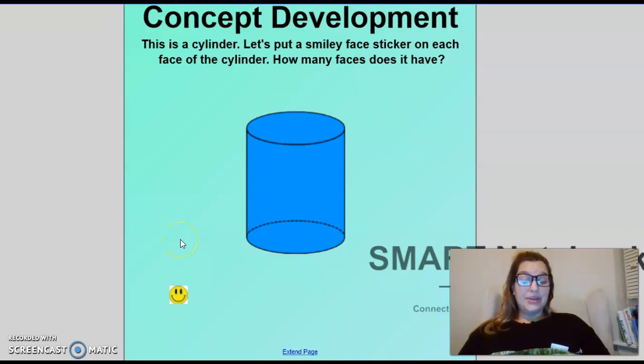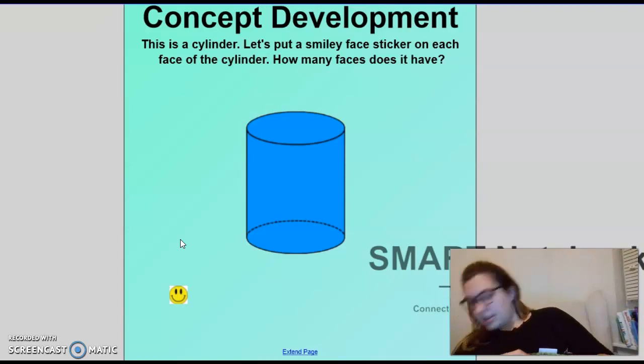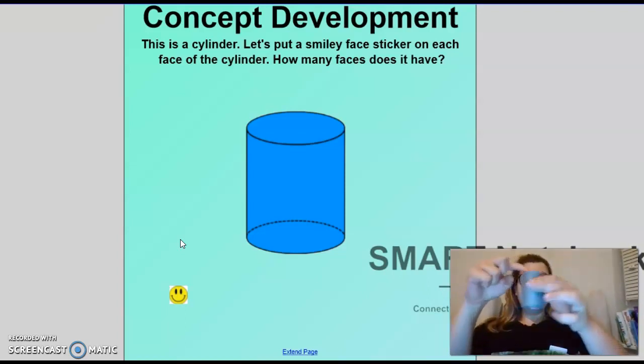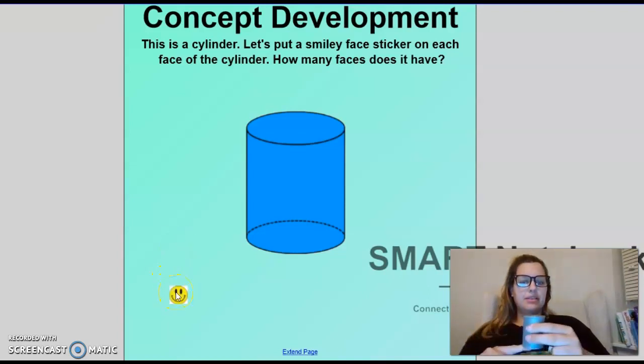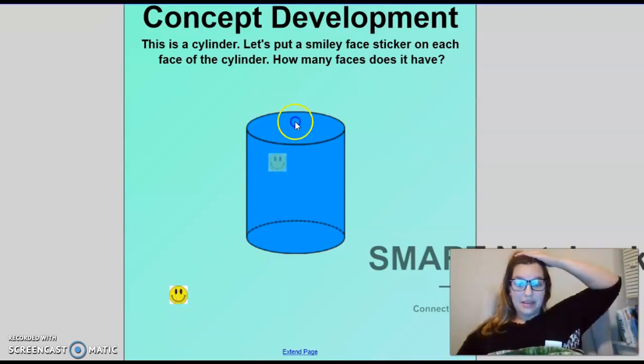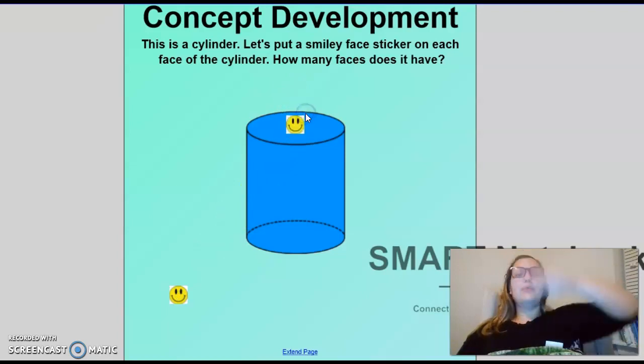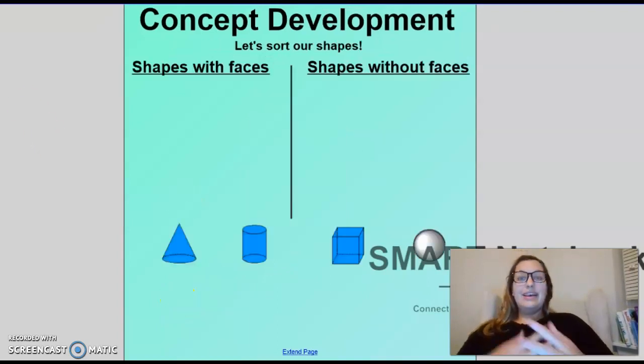Now, our cylinder we talked about before, the two circles on the top and a big rectangle. How many faces would be on our cylinder, do you think? Just the flat parts. Two. Very good. One up top and one down below with two circles.